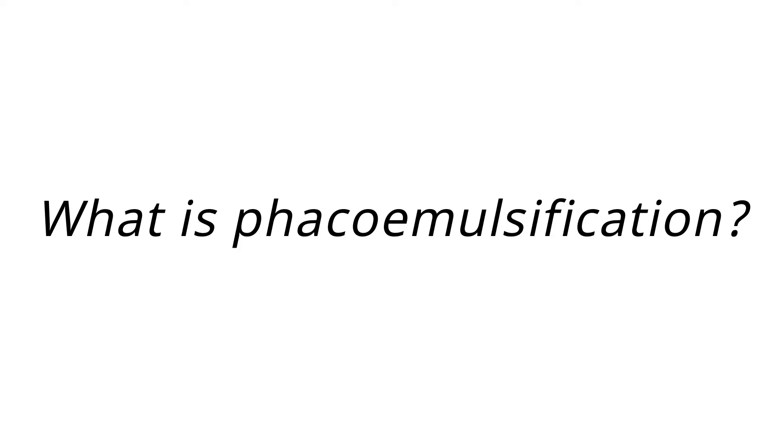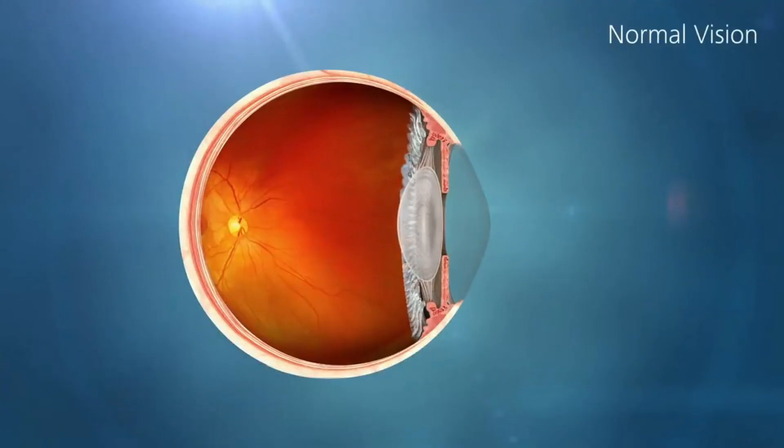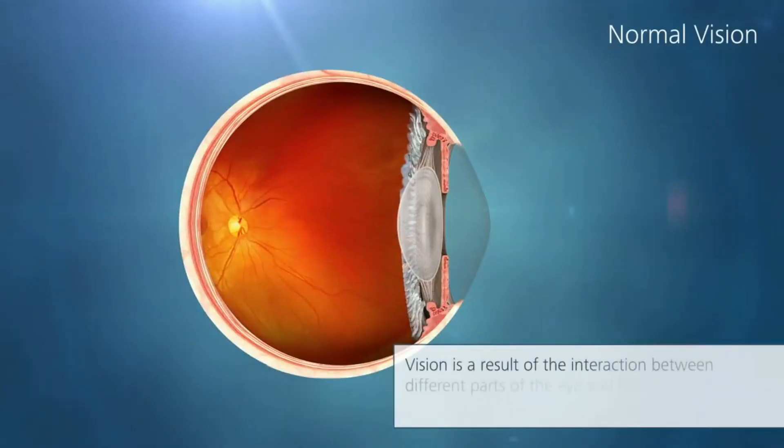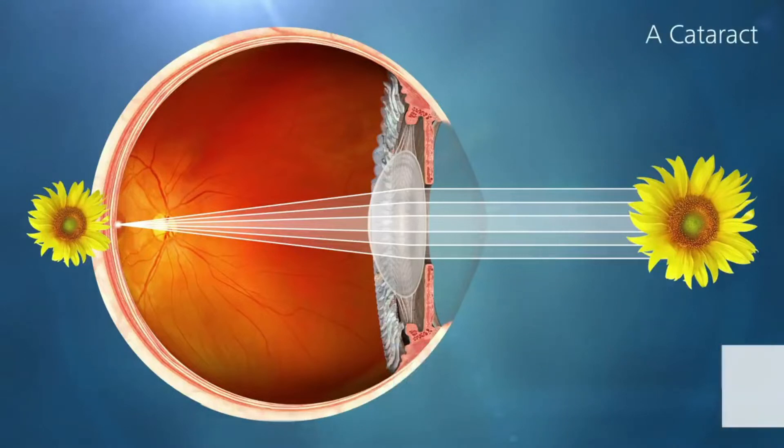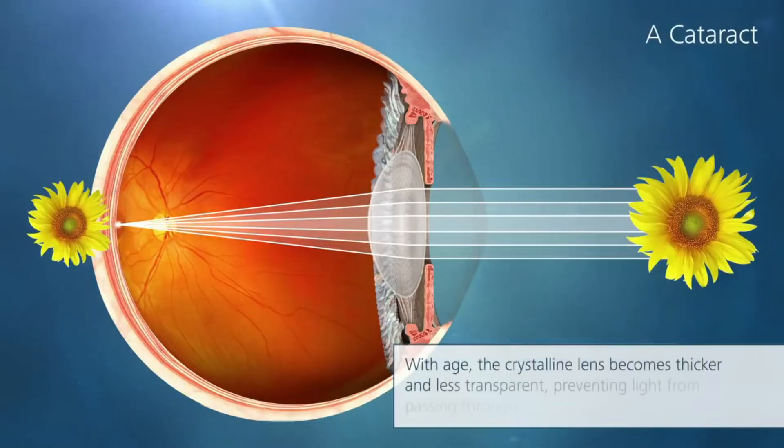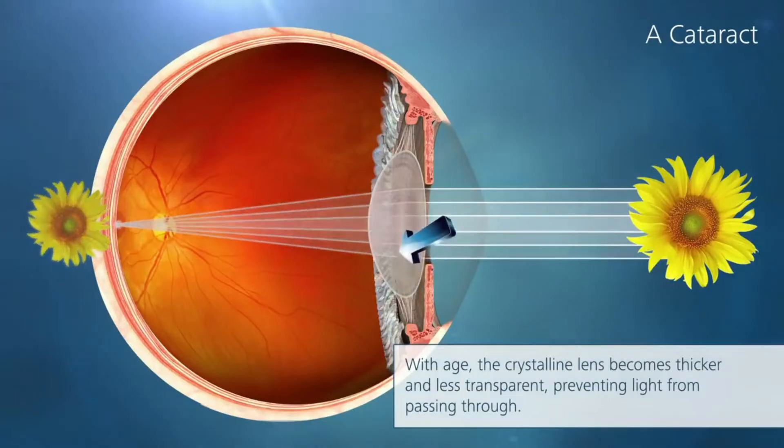So what is FACO emulsification? FACO emulsification is the most common cataract surgery technique performed. Cataract surgery is used to restore vision in patients whose vision has become cloudy from cataracts, a clouding of the eye's lens. The lens is located behind the iris and is responsible for focusing light on the retina and producing clear, sharp images.